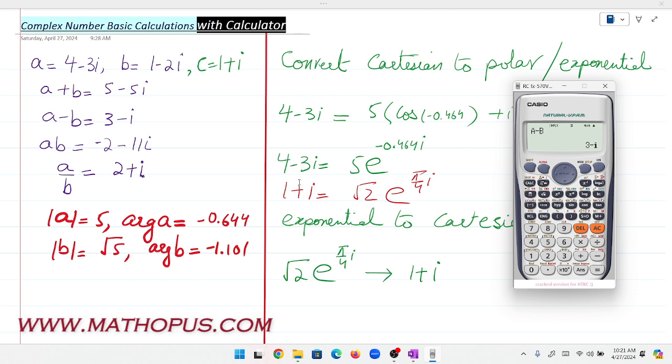Now let's do multiplication. Alpha A times B, or we can simply write AB. Equals -2-11i. This is the product of two complex numbers.